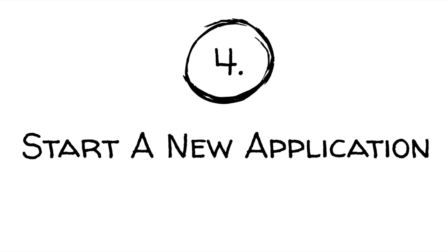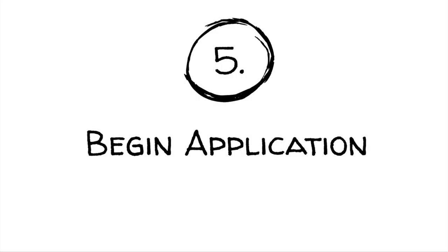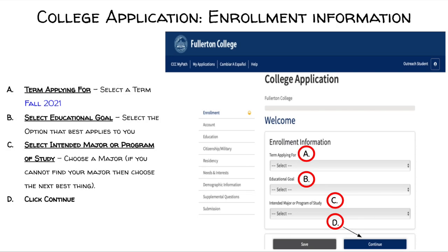You will now begin the Fullerton College application. First, click Start a New Application. The enrollment tab is where you will select the term you're applying for, an educational goal, and your intended major or program. It's important to select an educational goal and major to ensure your Promise benefits. Your major is not set in stone, so you are able to change it in the future at any time. Please make sure you select the correct term you are applying for.